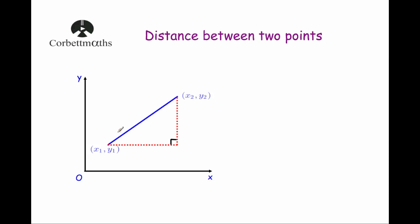We're going to do exactly the same, but we're going to call the first point x1y1 and the second point x2y2, and we're going to create this formula. So first of all let's work out this length here — this is the difference between their heights. The height of this point is y2, the height of this point is y1, so if we take them away we'll get y2 minus y1.